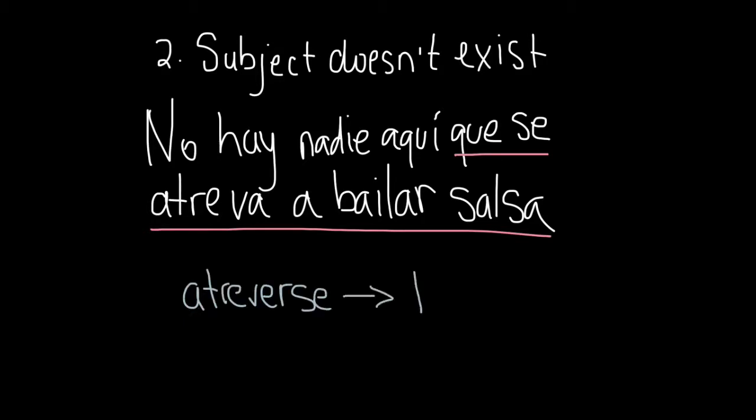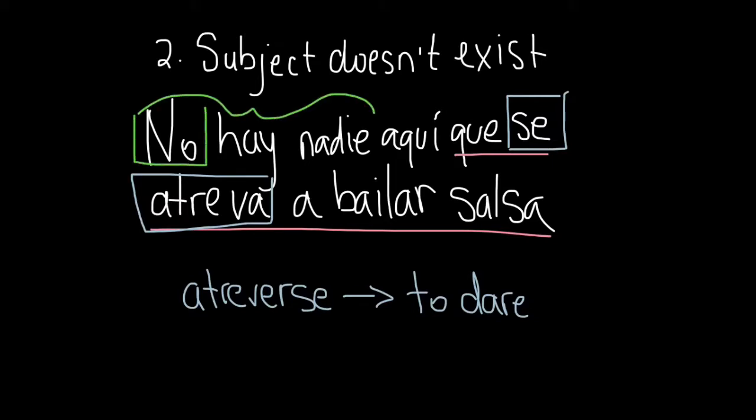So as a result, this triggers the subjunctive. Se atreva is the subjunctive form of the verb atreverse, to dare. And no hay nadie aquí, it means the subject doesn't exist.